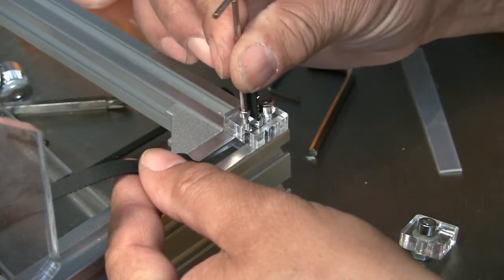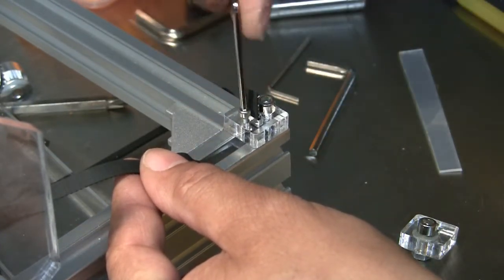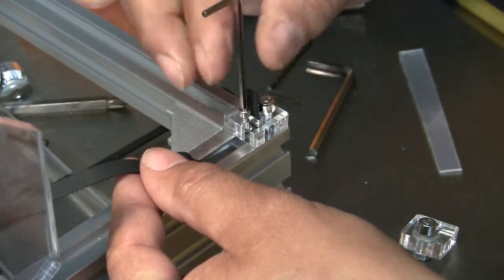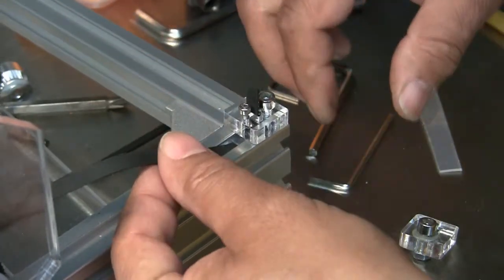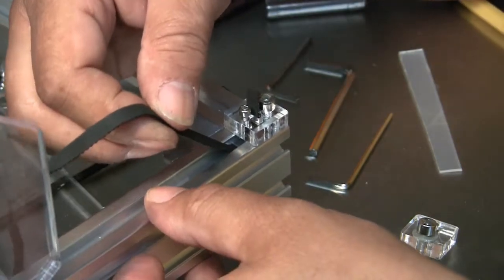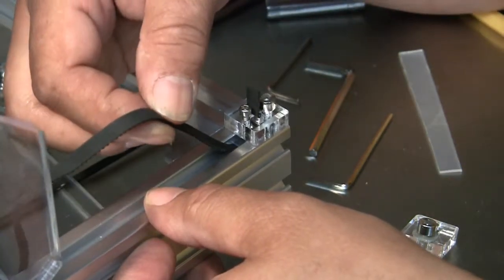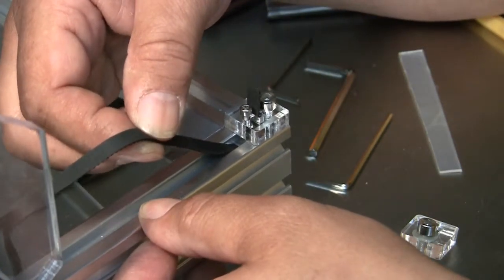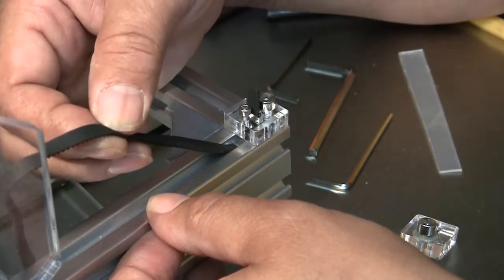Now the danger of over-tightening again, of course, is you can even pop a hole right through that plastic piece. So I just snug it down so that it sits on top of the belt, and the nice thing is now you've got a nice even distribution of weight.